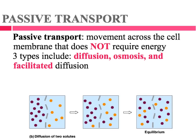Cells are always having to move things in and out of themselves — transporting substances, importing, exporting. And if every single time they had to move something across their membrane it took energy, our cells would require way more energy than we can produce through our mitochondria. So luckily, many of these molecules move through passive transport. Passive transport is movement across the cell membrane that does not require energy — it flows down the concentration gradient.